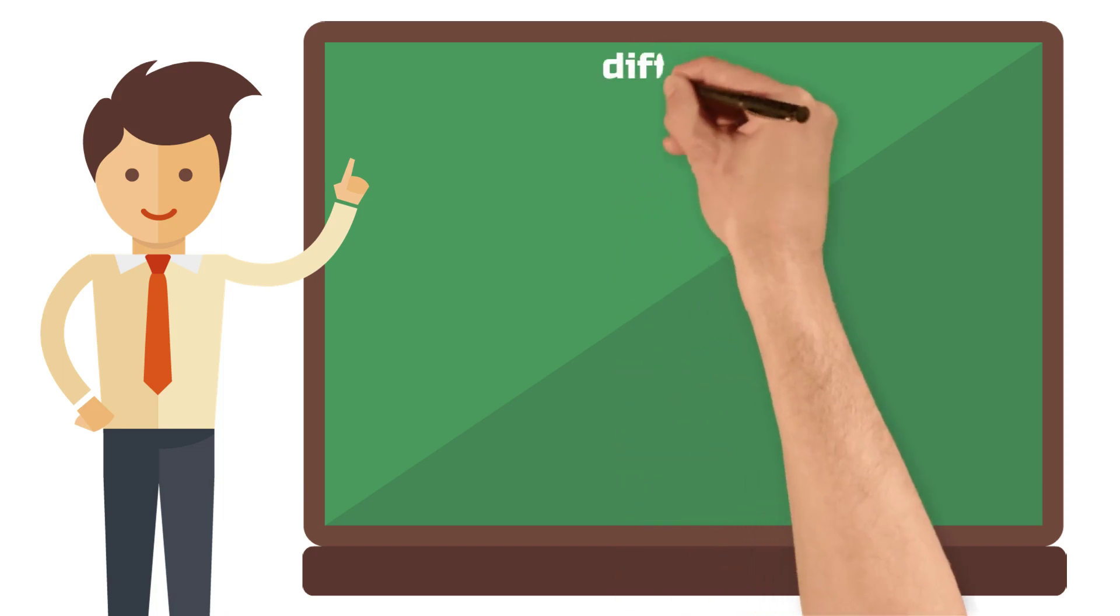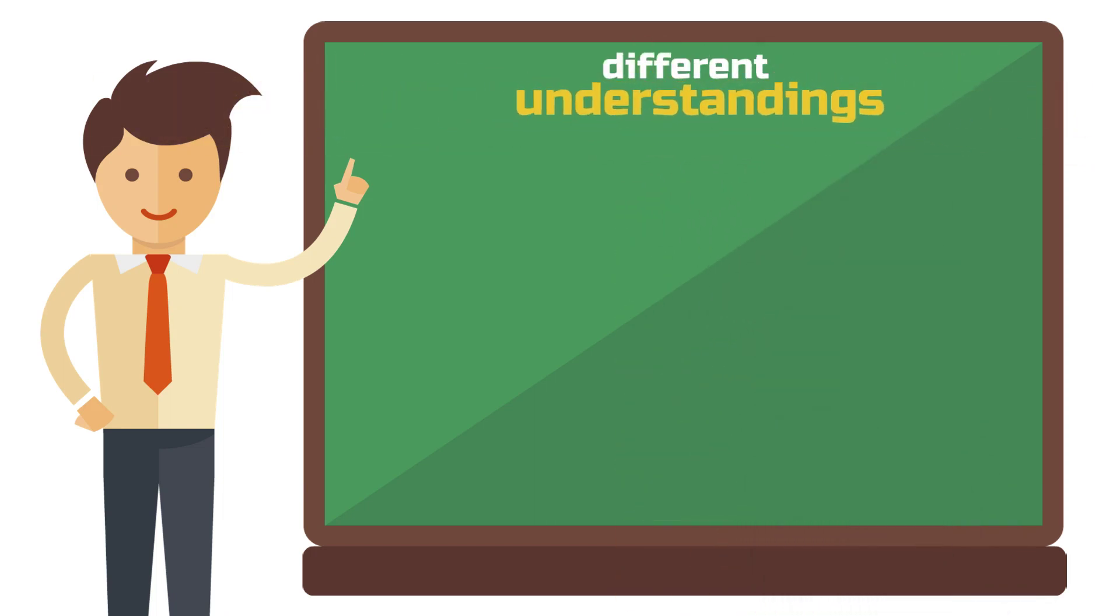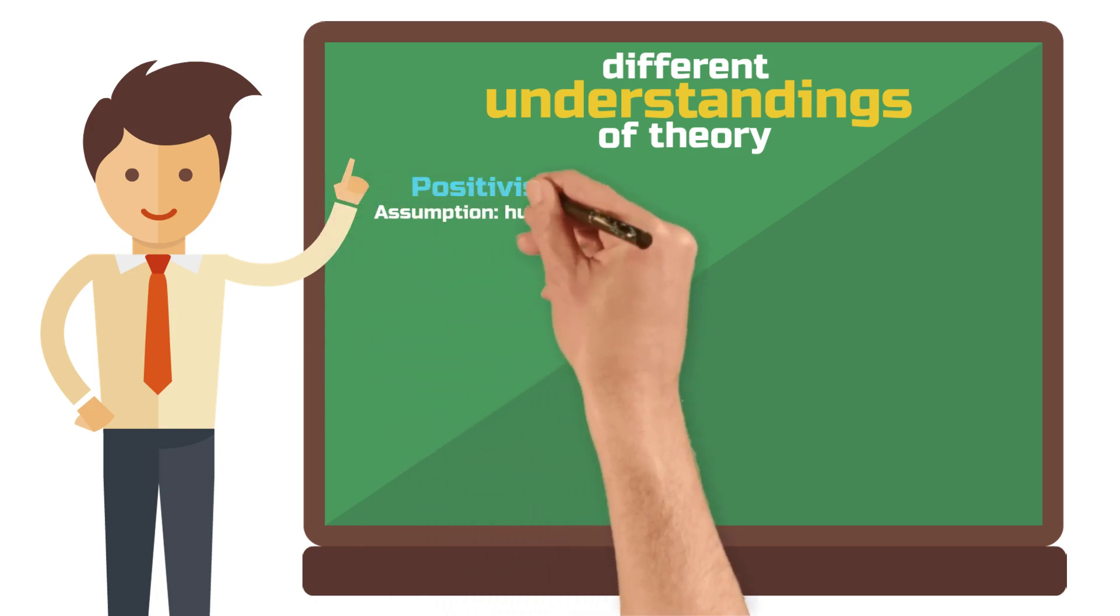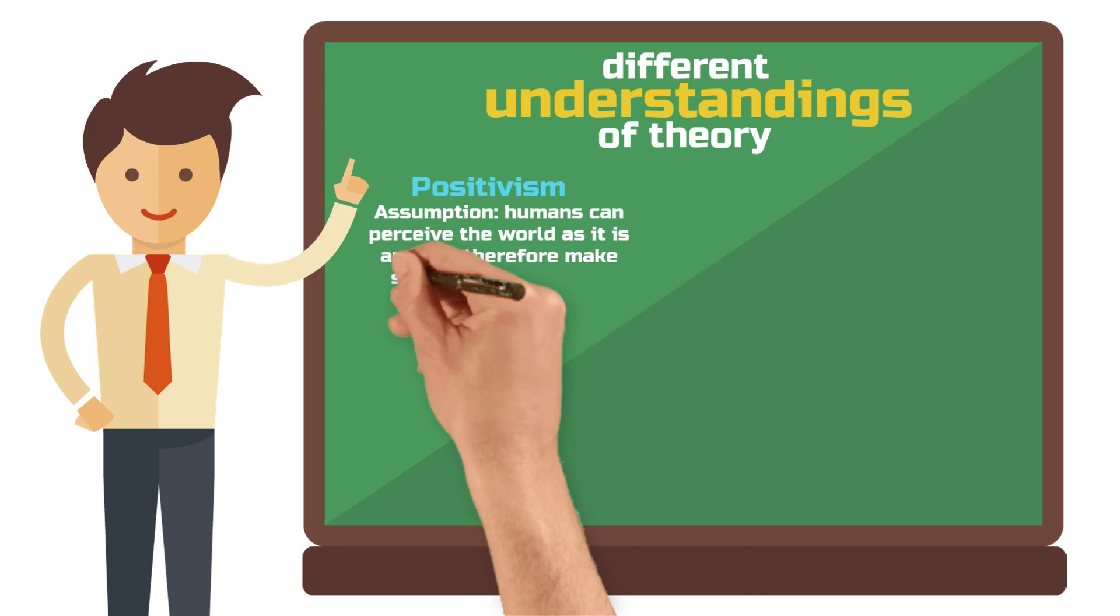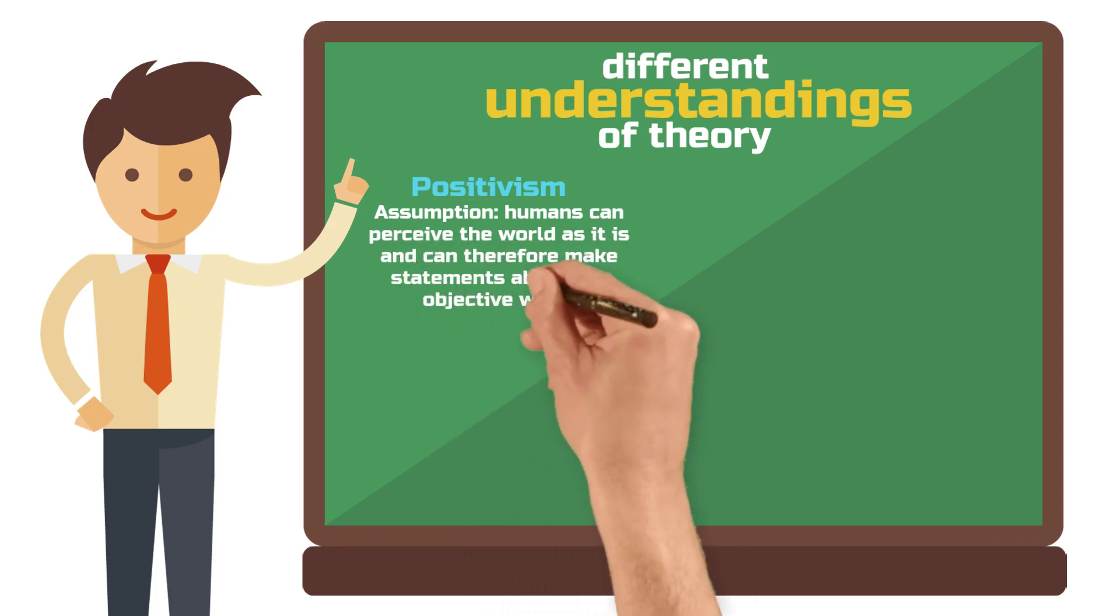Popper's idea of what a theory is is not the only understanding. Although Karl Popper did not consider himself a positivist, the understanding of theory that we just explained corresponds to positivist assumptions. This would mean that we humans can perceive the world as it is with our senses and can therefore make statements about the objective world.